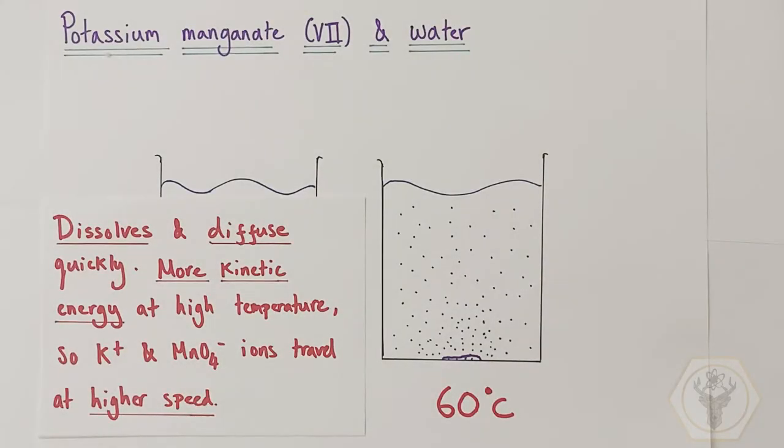On the other hand, in the hot water environment, the purple crystal appears to be dissolving much more quickly, much more readily, and the speed of the diffusing particles also seems to be much higher as they spread out quickly until evenly distributed throughout the water itself.